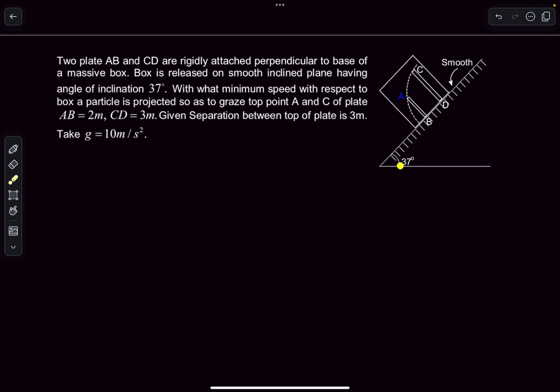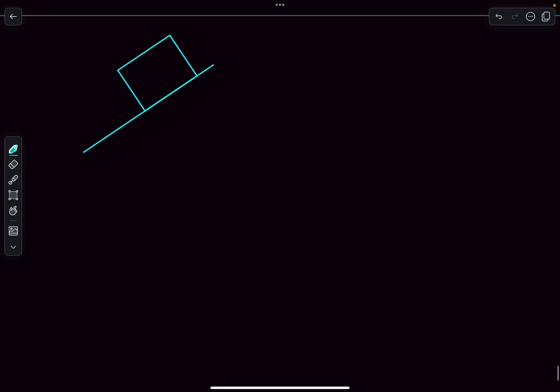The incline angle is 37 degrees and we have to find the minimum speed. There is somebody standing inside the box and we need to find the velocity with which this guy has to throw a ball with respect to the box such that it basically grazes point A and point C of these two plates. Give this problem a try and then you can check out the solution.